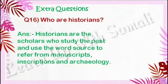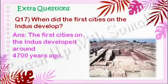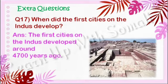Question number sixteen: Who are historians? Historians are the scholars who study the past and use the word 'source' to refer to manuscripts, inscriptions and archaeology. Question number seventeen: When did the first cities on the Indus develop? The answer is the first cities on the Indus developed around 4,700 years ago.